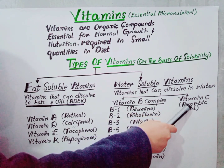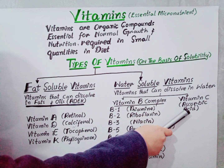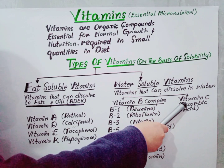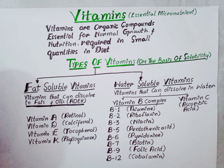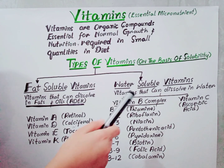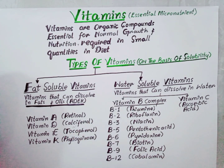Vitamin C, also known as ascorbic acid, is a powerful antioxidant and it maintains the connective tissue. The main sources of vitamin C are fruits and vegetables.